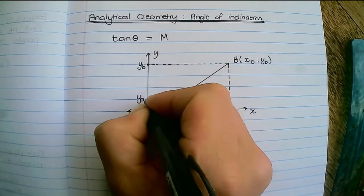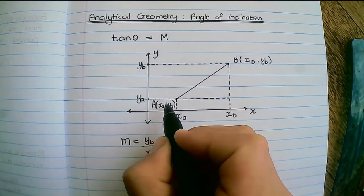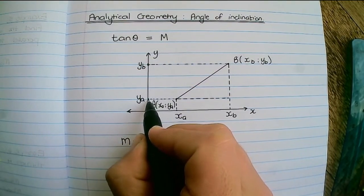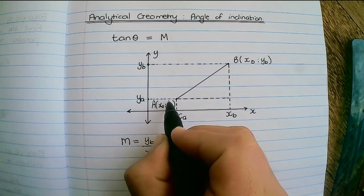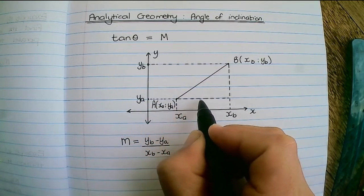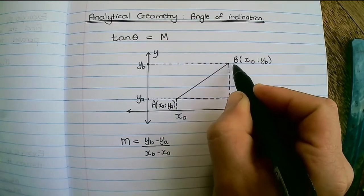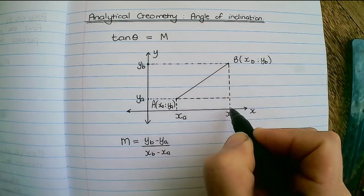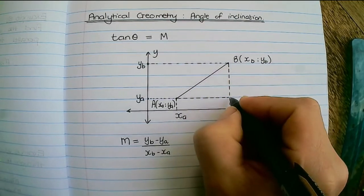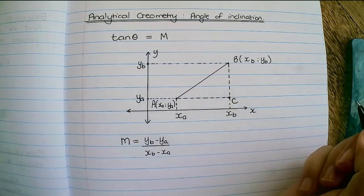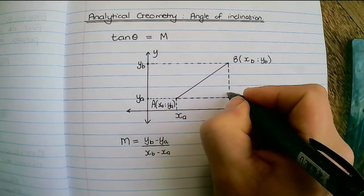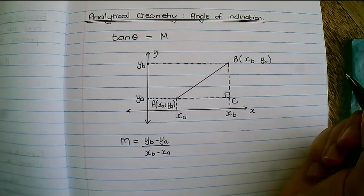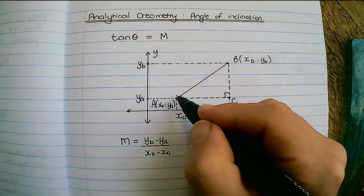Now what I've done is I have extended this horizontal line up until where it meets the downward line of x for point B and let's call this point C. This would be a 90 degree angle or right angle triangle.